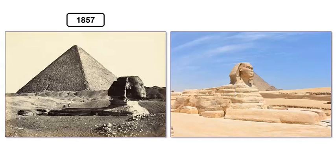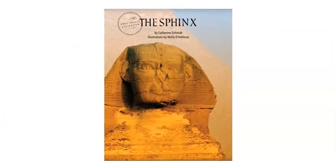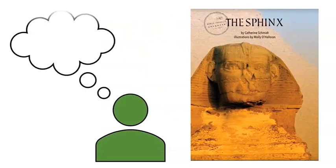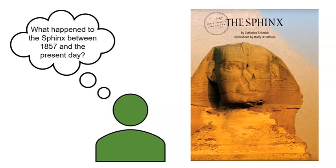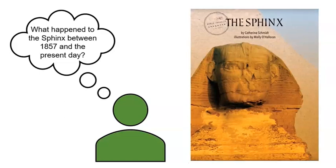How can we start to answer these questions? I have an idea. Let's read this book to answer some of our questions about how the Sphinx appearance changed over time. While I read, listen for evidence that can answer this question. What happened to the Sphinx between 1857 and the present day? We will look for evidence in the pictures and the text. Ready to read?